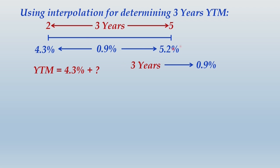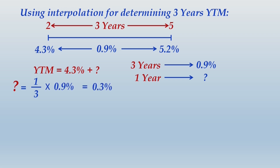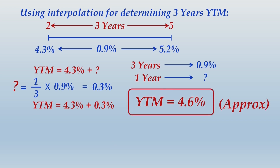If a 3-year gap results in a YTM difference of 0.9%, then a 1-year gap results in how much? Applying ratio and proportion: 1/3 × 0.9% = 0.3%. That 0.3% must be added to 4.3%, so the estimated YTM for the 3-year bond is 4.3% + 0.3% = 4.6%.